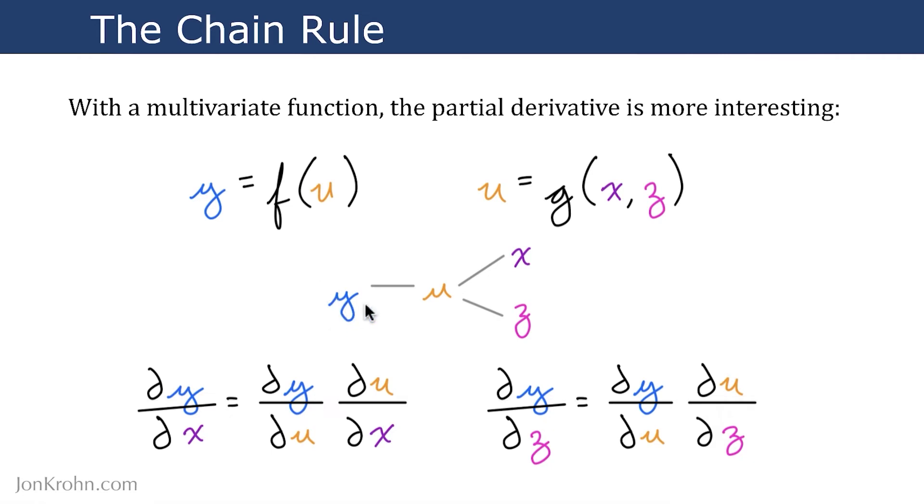If we're interested in ∂y/∂z, it's a similar situation: we can calculate ∂u/∂z. We already have ∂y/∂u from earlier. You can then multiply ∂y/∂u by ∂u/∂z. The ∂u in the numerator cancels out the ∂u in the denominator, and you're left with ∂y/∂z.